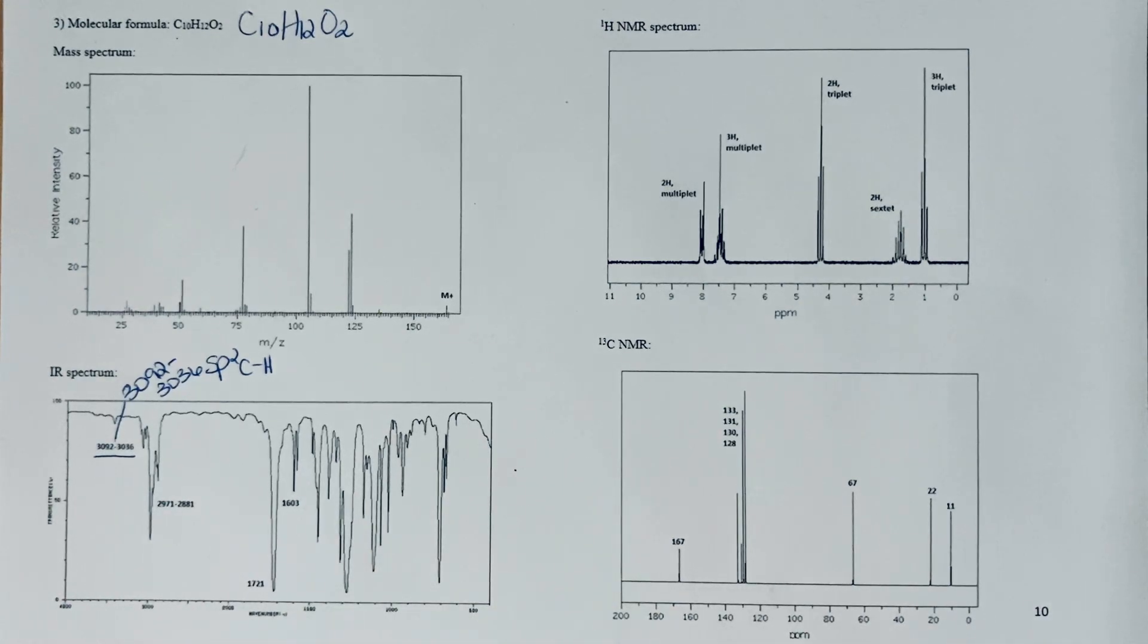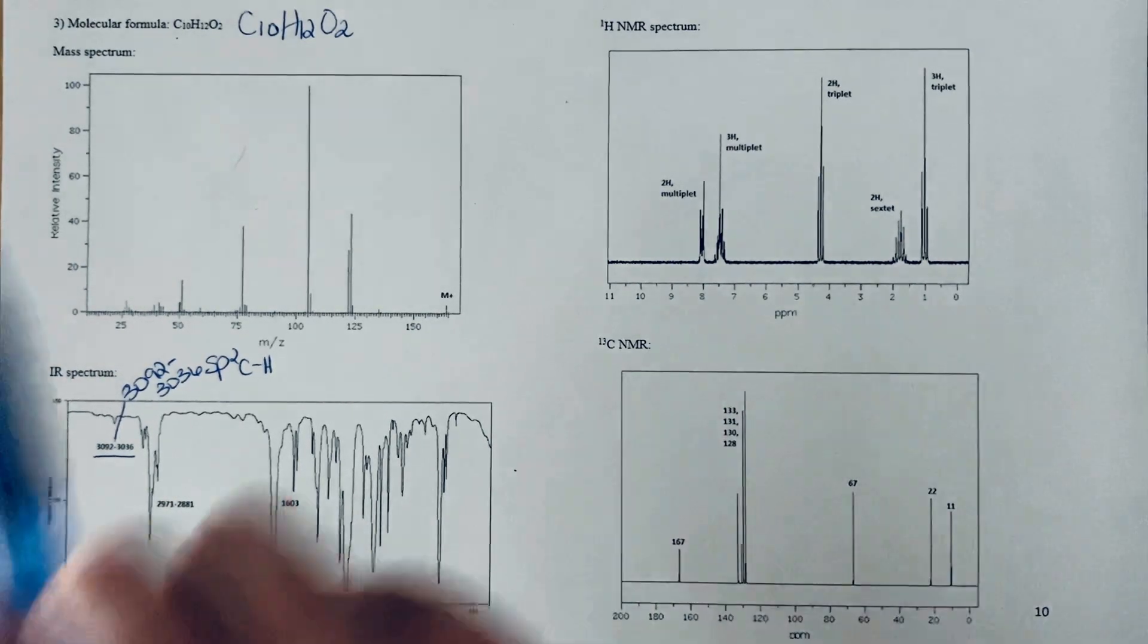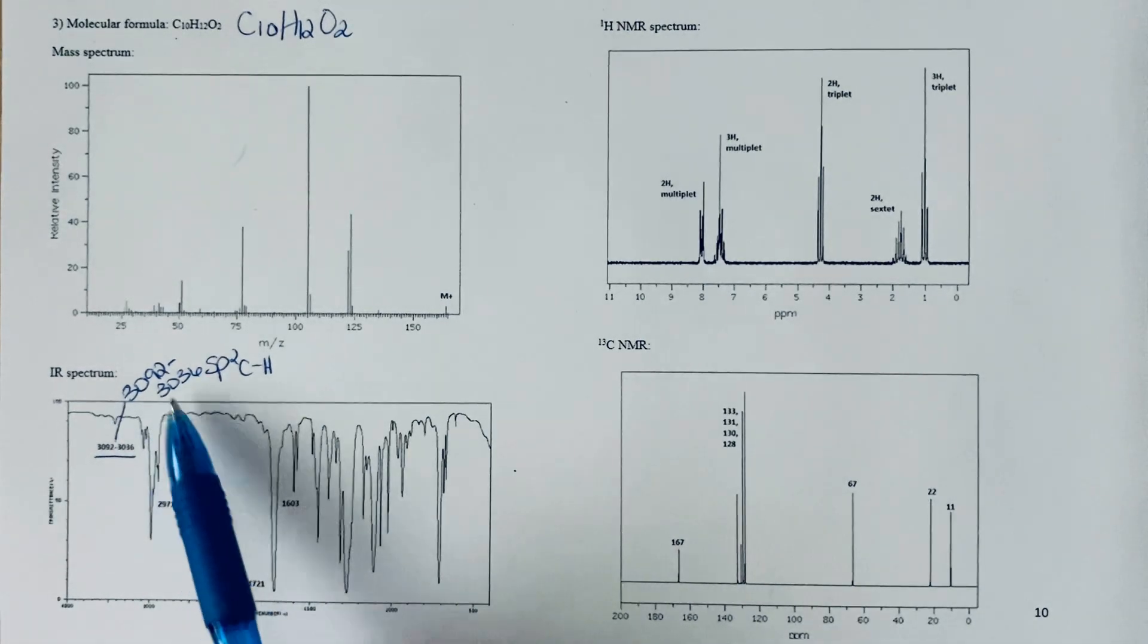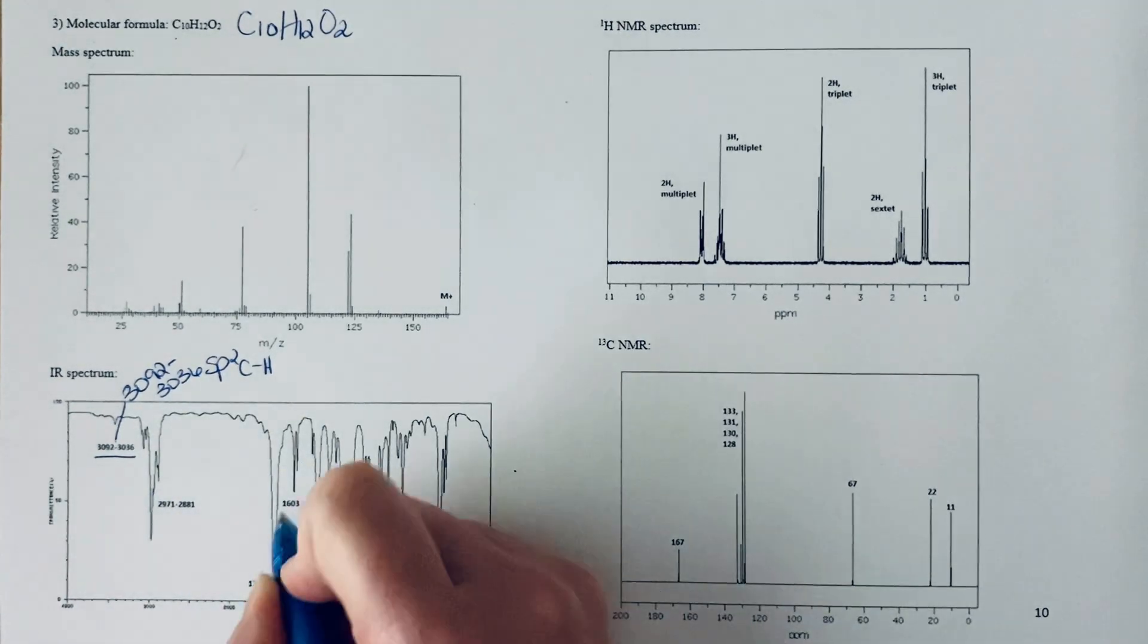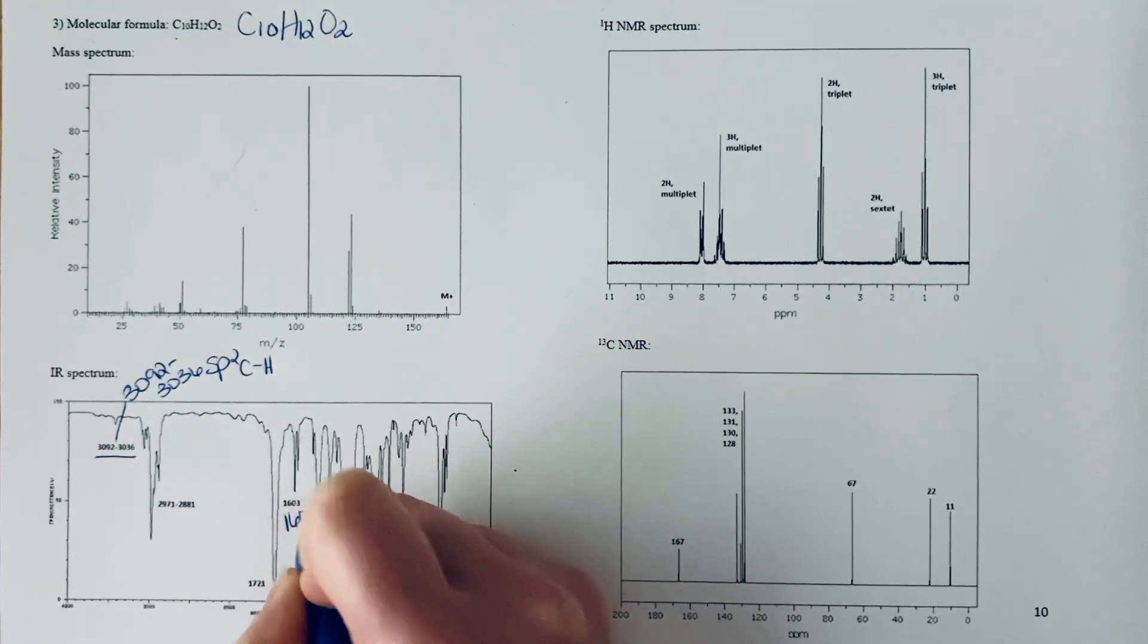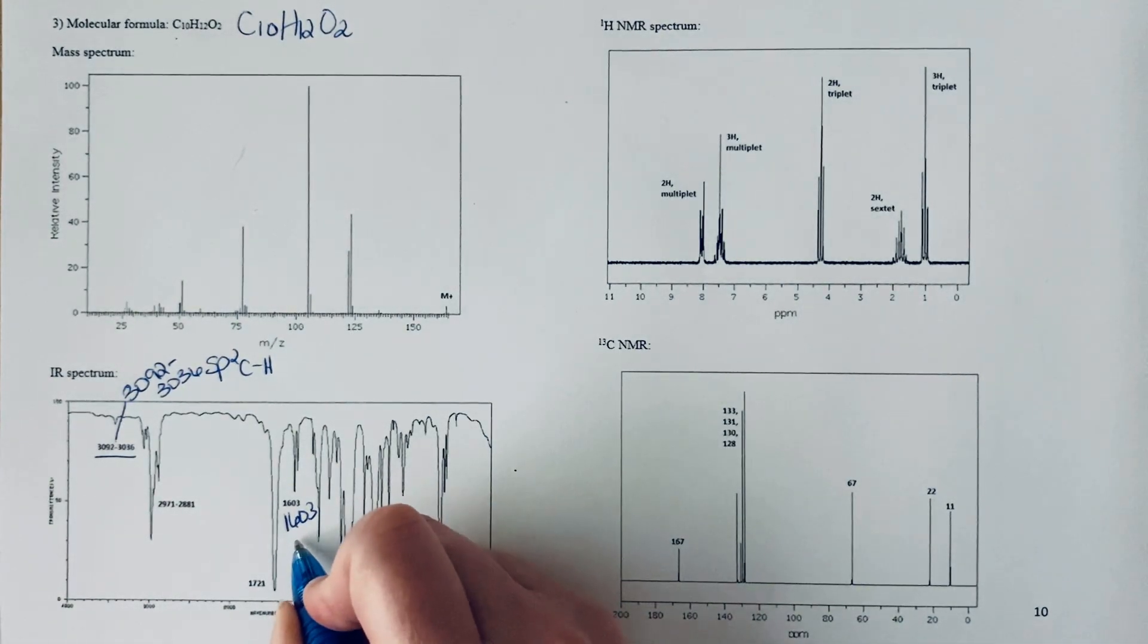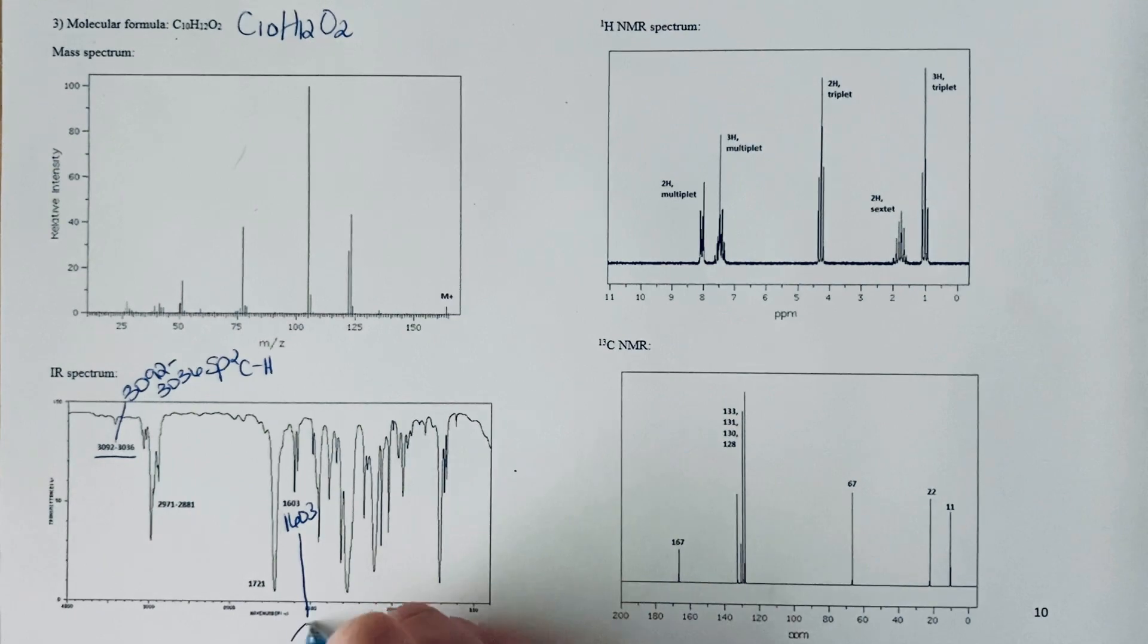This tells you that you've got an alkene or maybe even a benzene ring in the molecule. With a molecular formula with 10 carbon atoms, I am personally hoping for a benzene ring because that would locate six of those 10 carbon atoms. This peak at 1603 is consistent with a benzene ring.